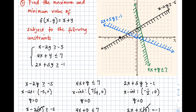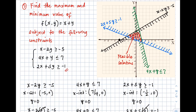After graphing all three inequalities, we can now identify the feasible solutions. As you can see, the three graphs intersect and overlap in the middle — that overlapping region is our feasible solution, which we called the region of solutions in our previous topic. The feasible solutions satisfy all our constraints. To find the maximum and minimum value of the objective function, we need to find the critical points — the vertices of the feasible region.